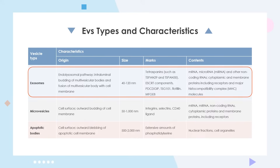Exosomes originate from the lysosomal pathway and are usually 40 to 120 nanometers in size. Their markers include tetraspanins, ESCRT components, PDCD6IP, TSG101, and so on.